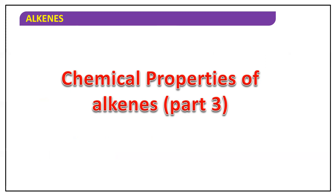Homework for today: first, explain Markovnikov's rule with an example. Second, explain anti-Markovnikov's rule with an example. Write each three times to register them in memory. We will continue the next set of chemical properties in the upcoming class. Until then, keep practicing. Namaste.